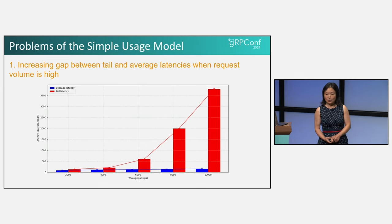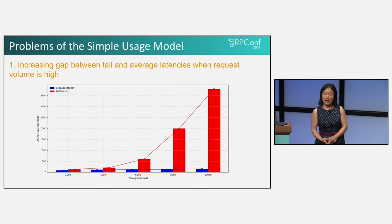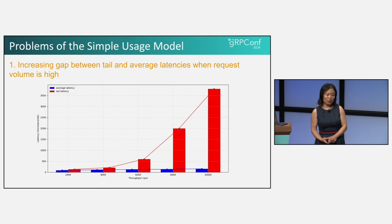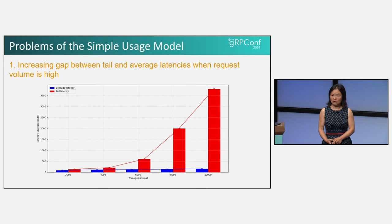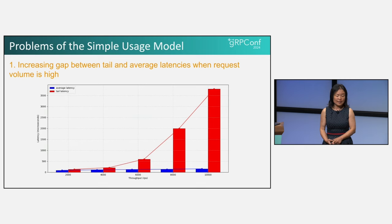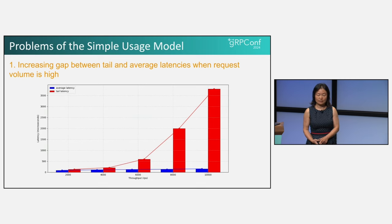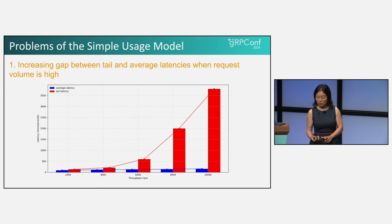The cause of this issue lies in the contention problem we mentioned earlier. As more Go routines are created to handle the increasing volume of requests, they begin to compete for CPU resources, leading to more inefficient scheduling and consequently longer delays for some requests.